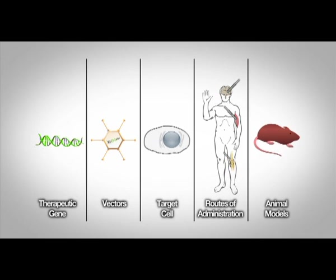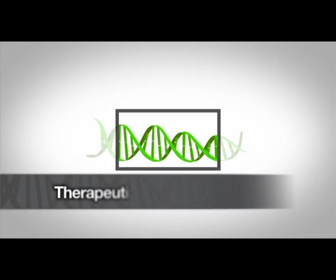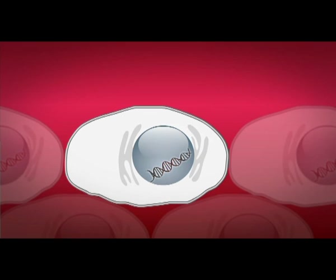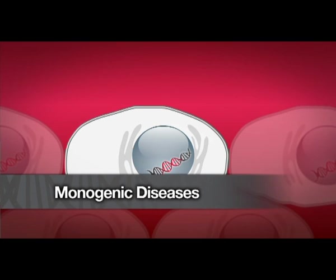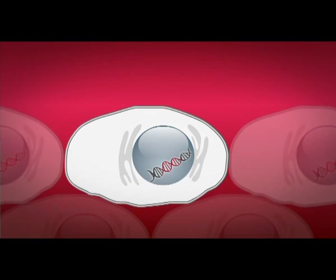The first key element when developing a gene therapy protocol is to choose the therapeutic gene to be introduced into the body to counteract the disease. There are illnesses caused by the lack or dysfunction of a single protein, as in haemophilia or cystic fibrosis. For these diseases, the choice of the gene to transfer is easily identifiable. A correct copy of the gene whose dysfunction causes the disease will be introduced.